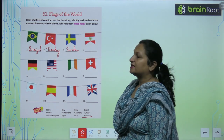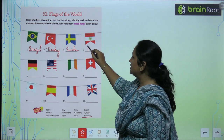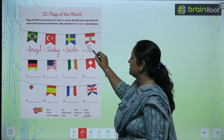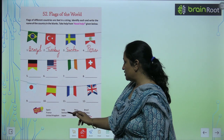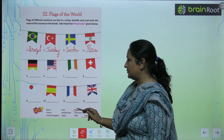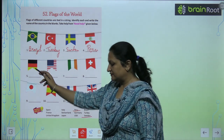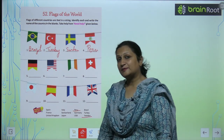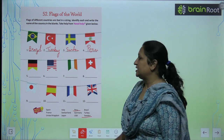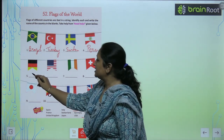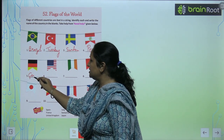And this flag is of Peru. You will write P-E-R-U, so Peru goes here. Now see this flag — this flag belongs to Germany. So you will write Germany here.